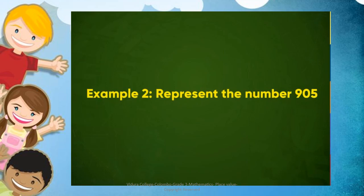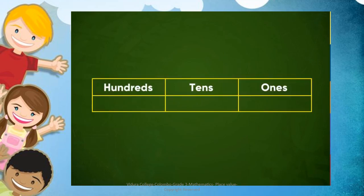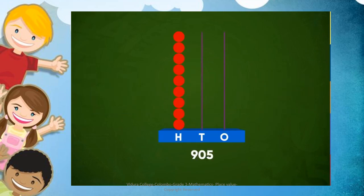Example 3: represent the number 905. We know that this number has 9 hundreds, 0 tens and 5 units. So we put 9 beads in the hundreds spike, 0 tens so we don't put any beads in the tens spike, and finally we put 5 beads in the units spike. Now the number 905 is represented on the abacus.